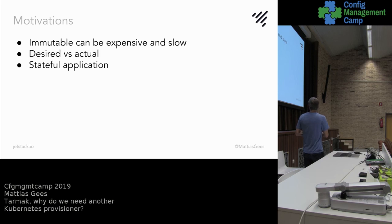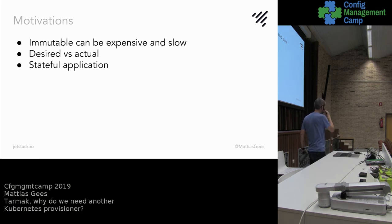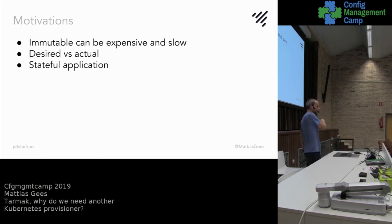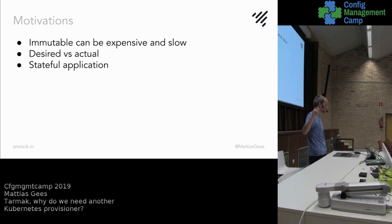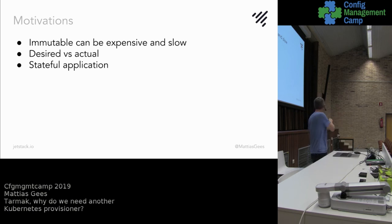We also talked a lot about immutable infrastructure already, and that it can be expensive and slow. One of the other requirements was that we wanted to know the desired state versus the actual state, and that we wanted to make sure what we are applying is actually being applied and verified.